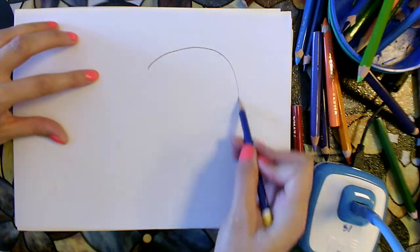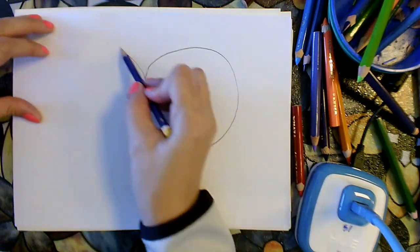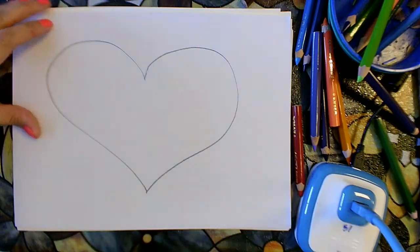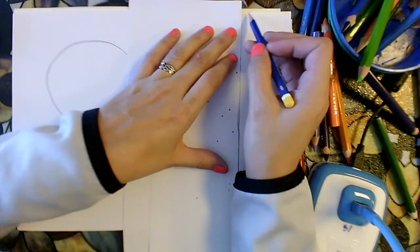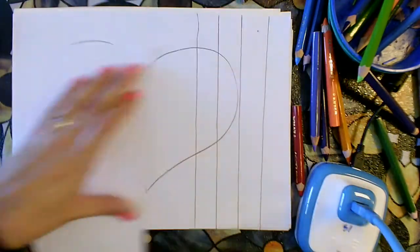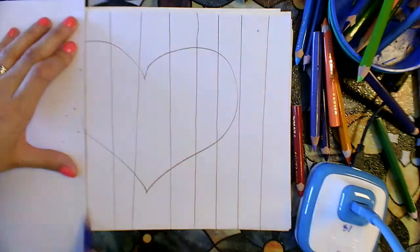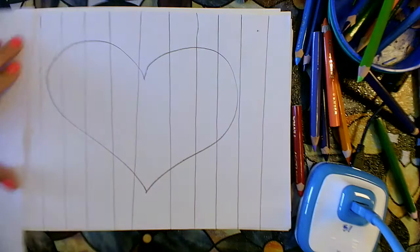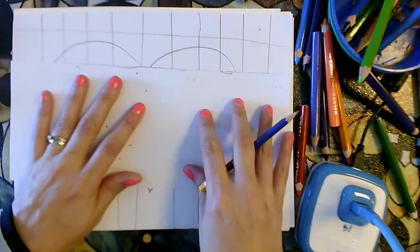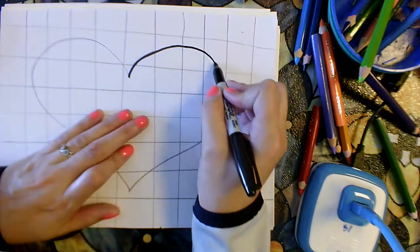So for this project, you're going to start by drawing a large heart in the middle of your page. Then you will use a ruler, or as you can see, I am using just a piece of paper that's folded to make straight lines, going up and down across the paper, and then go side to side across the paper.